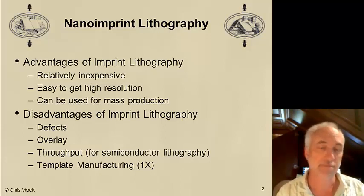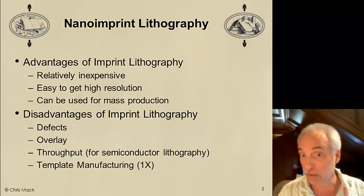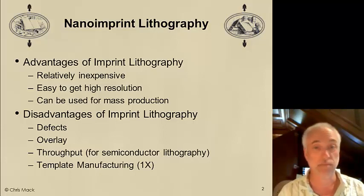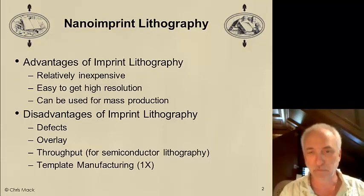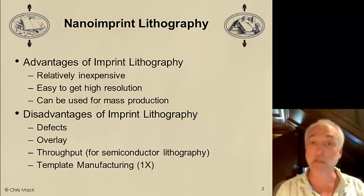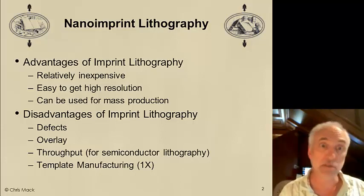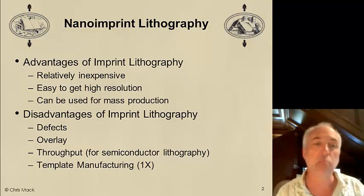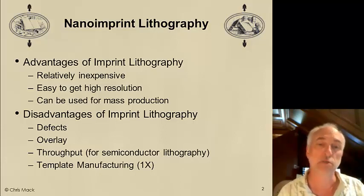Then there's the template. Making the template is hard. Of course, making any photomask is hard, but for imprint lithography, our templates are 1x — the features on the template are the same dimensions as the features being printed on the substrate. In projection lithography, we use 4x, 5x, or 10x (4x being most common today), meaning the patterns on the photomask are four times bigger, which is significantly easier — easier to control feature sizes and registration. Much easier at 4x than at 1x, so 1x template manufacturing is another big challenge.